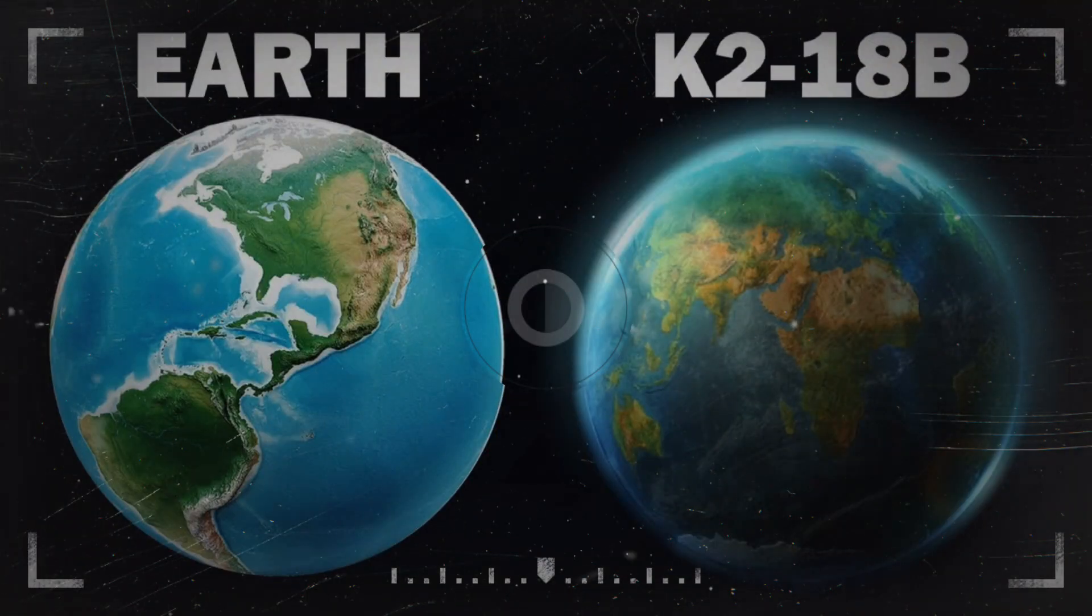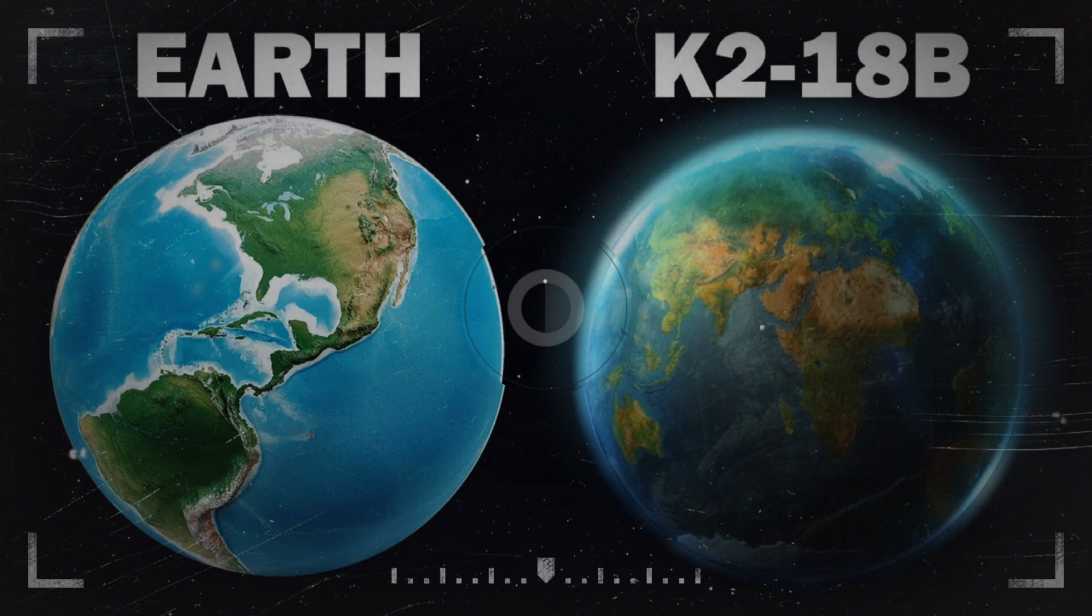However, this pales in comparison to the revelation of K-218b, a high-sheen exoplanet boasting a hydrogen-rich atmosphere and a water-covered surface, essential components for sustaining life.